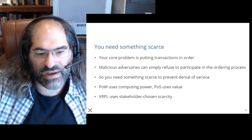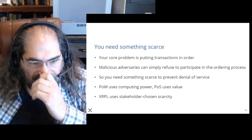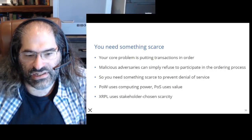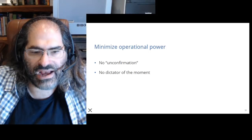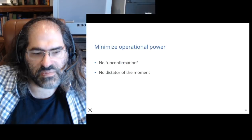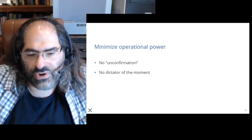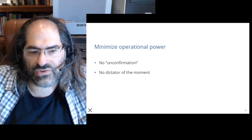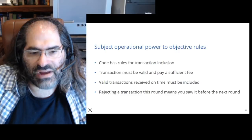You need something scarce that a malicious adversary can't have an unlimited amount of. Proof of work uses computing power; proof of stake uses value in the native token. The XRP Ledger simply uses stakeholder-chosen scarcity. To minimize the need for incentives, we minimized the operational power any network participant has — no one-confirmation reorganizations, no one gets to decide which transactions go in a block. If you can't do a double spend through reorganizing transactions and you can't censor, there's little point in acquiring large amounts of operational power.